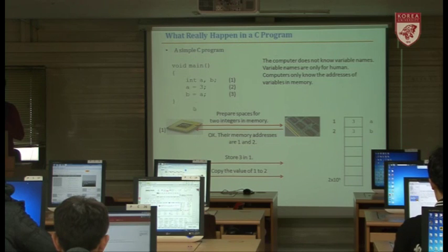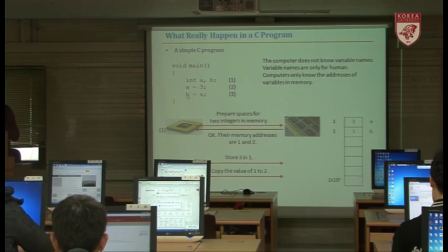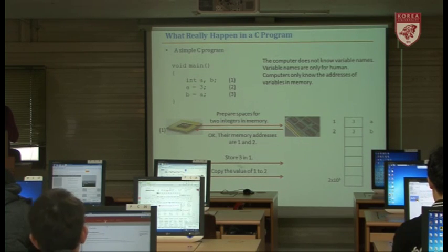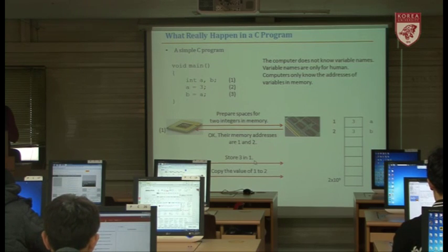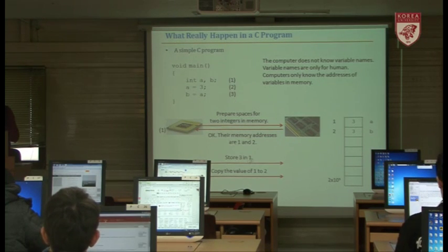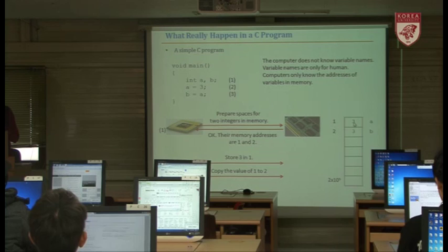Now the CPU knows room number one is assigned to A and room number two is assigned to B. Looking at the second statement — A equals 3 — humans interpret it as 'put 3 into variable A,' but in machine terms, it says 'please store value 3 in room number one,' because room number one is assigned to variable A.